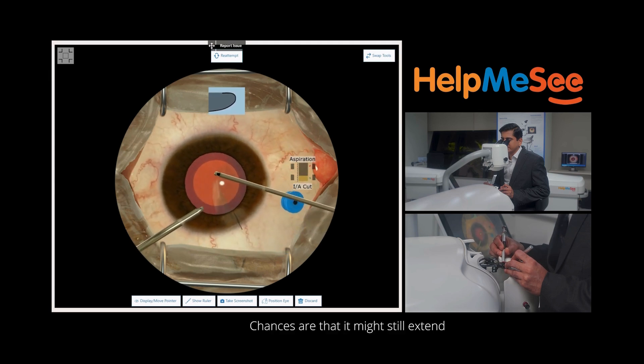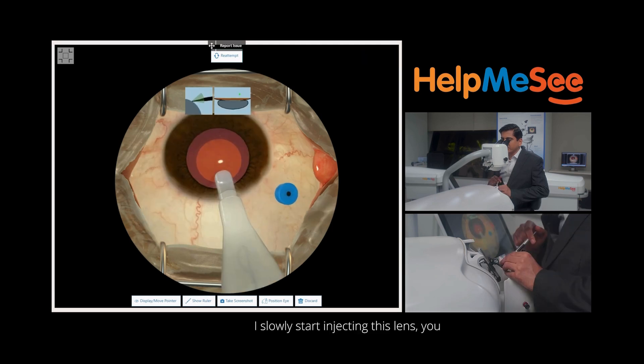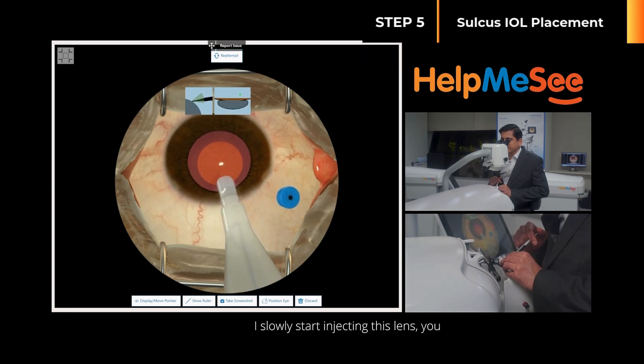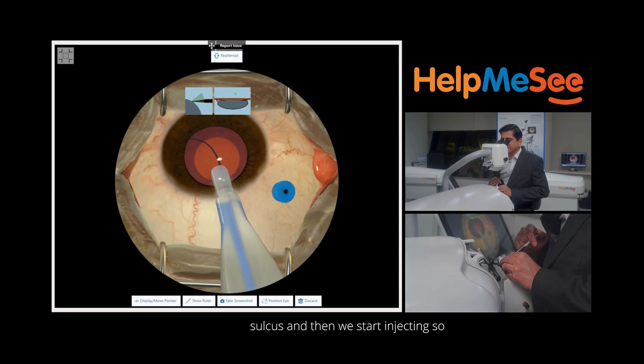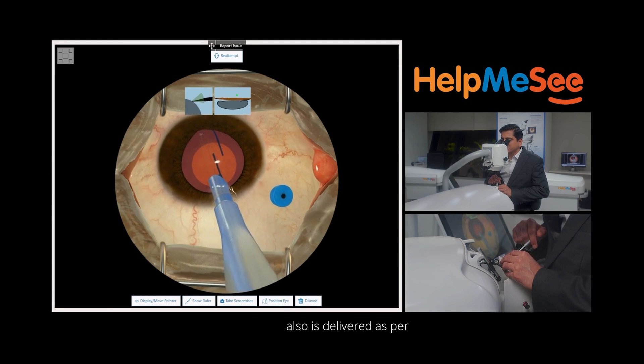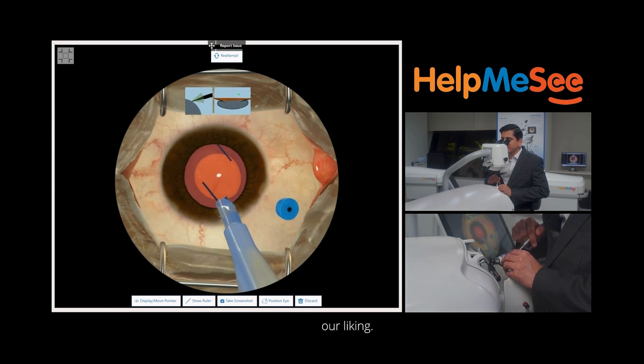I slowly start injecting this lens. You can see the lens now coming out of the injector. First is the leading haptic. We have to ensure that the leading haptic is placed within the sulcus and then we start injecting so that the trailing haptic also is delivered as per our liking.